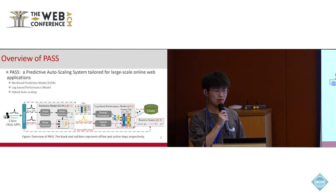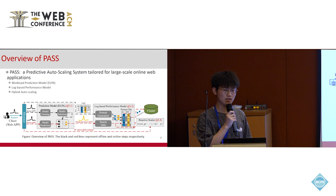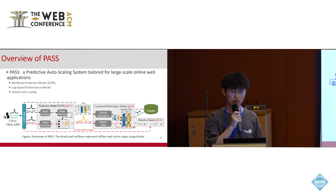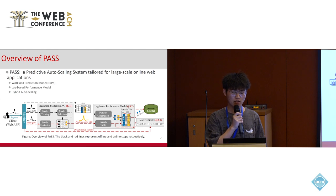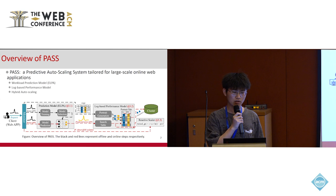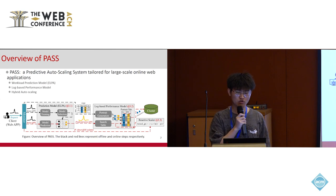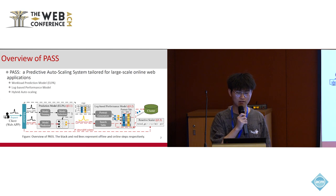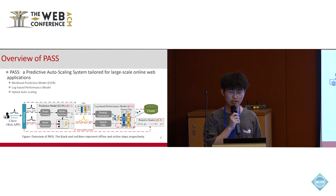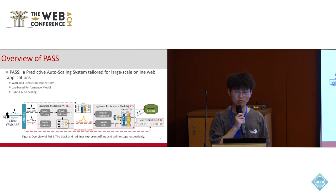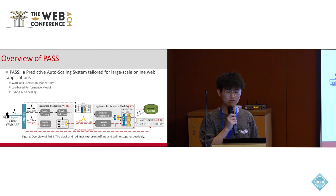To address these issues, we propose PaaS, a predictive auto-scaling system tailored for large-scale online web applications. The overall framework of PaaS is illustrated in the figure. The black lines represent the offline operations, where the workload prediction component involves the training and selection of sub-models, which are then integrated into the model used online. The performance model table is generated based on historical logs, and it maintains the max QPS that can be handled by the current number of instances without violating QoS.